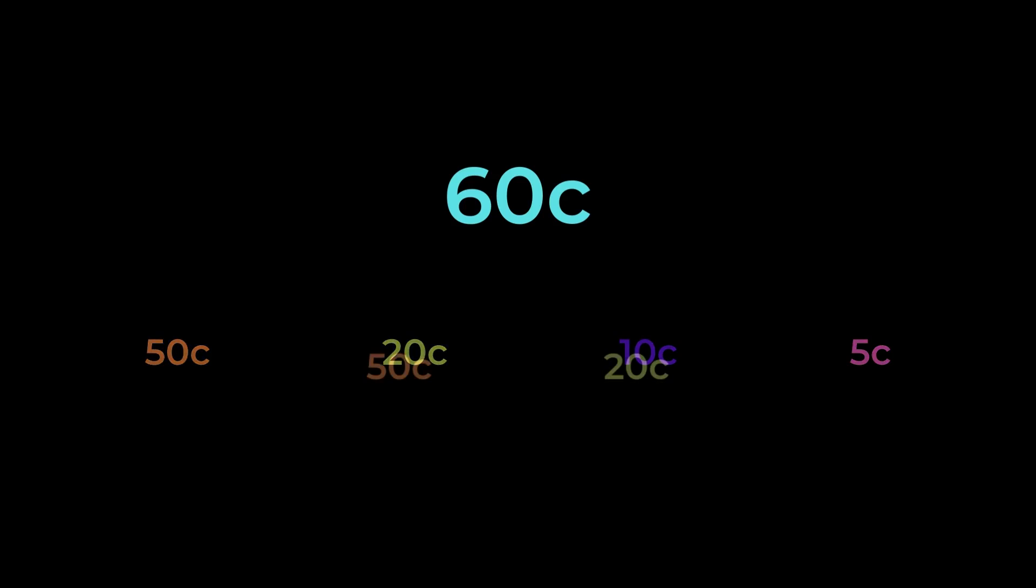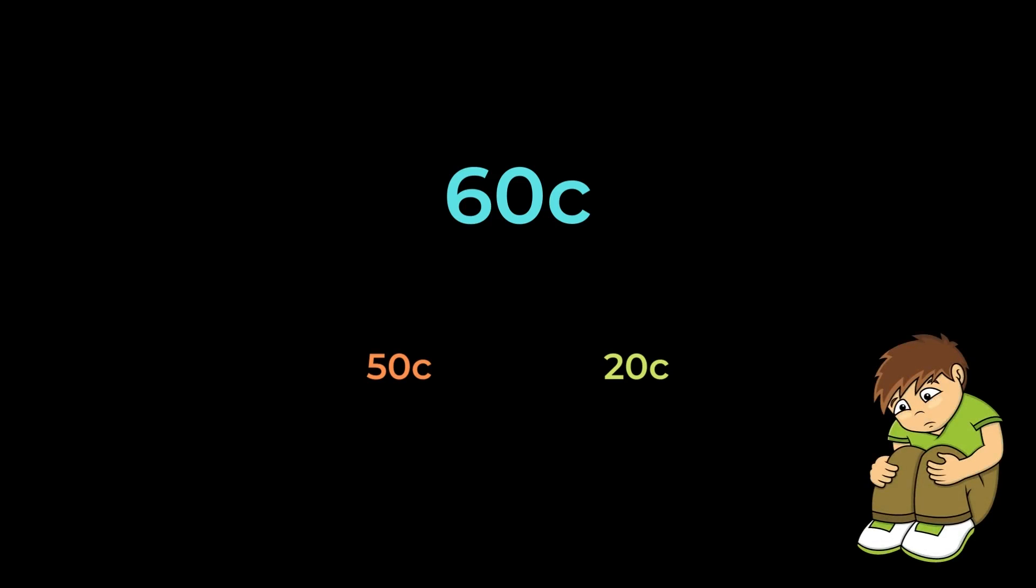Imagine if we now only have a 50 cent coin and a 20 cent coin. To make change for 60 cents, we'll first take the 50 cents, and then there's nothing we can do. As we saw earlier though, we could have used three 20 cent coins for this purpose. So the greedy approach has been broken by this input.